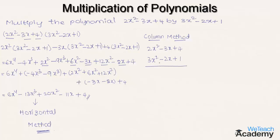First, multiply the term 3x² with the polynomial 2x² minus 3x plus 4: 3x² into 2x² gives 6x⁴, 3x² into minus 3x gives minus 9x³, and 3x² into 4 gives 12x². Next, multiply minus 2x with the polynomial: minus 2x into 2x² gives minus 4x³. We write minus 4x³ below minus 9x³ so that like terms appear in the same column.